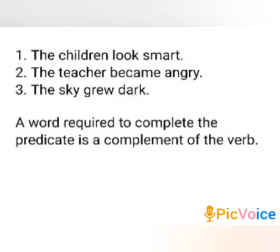Read the following sentences. The children look smart. The teacher became angry. The sky grew dark. The verbs in these sentences do not give us full meaning by themselves — we must add something to them to make sense. What we add is not an object, therefore these verbs are not transitive. Some words are required to complete the predicates; we call these words complements. In the above sentences, smart, angry and dark are complements. A word required to complete the predicate is a complement of the verb.